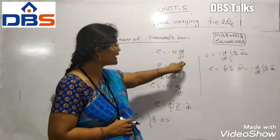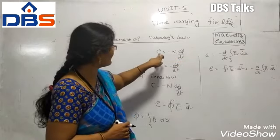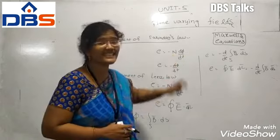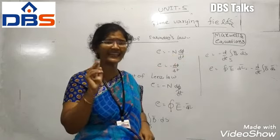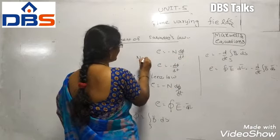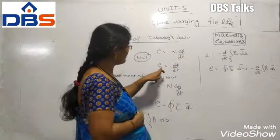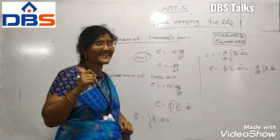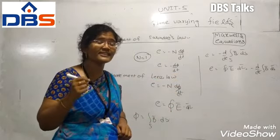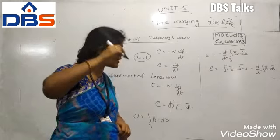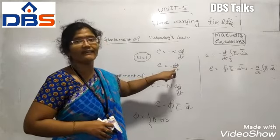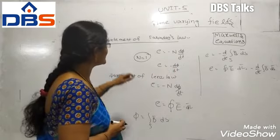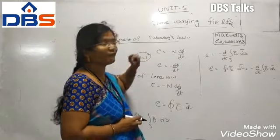This depends upon the time period. At that time E equals minus N dφ/dt. Here N means number of turns. If you take a single turn circuit, N is equal to 1, so it becomes E equals minus dφ/dt. The minus sign indicates that the electromotive force is produced in the opposite direction to the magnetic flux, as per Lenz's law. This is the statement of Faraday's law.